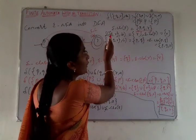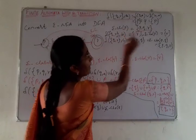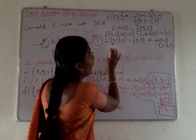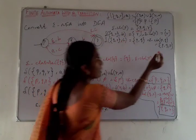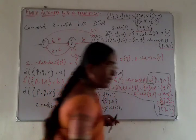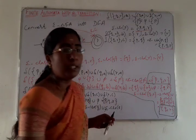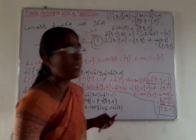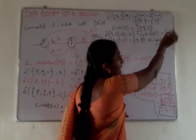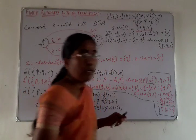Likewise, QR on input B transitions to state R, and QR on input C transitions to state PQR. The new state produced here is R, which will be considered as a new state.